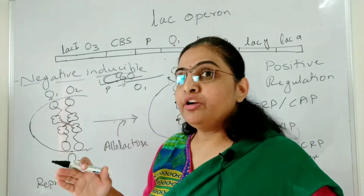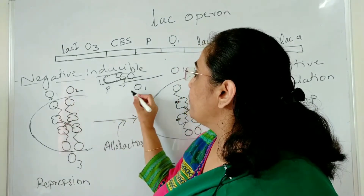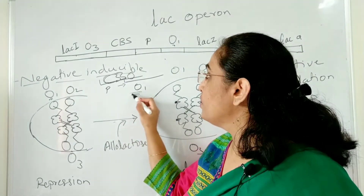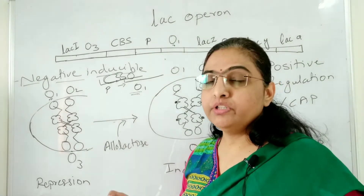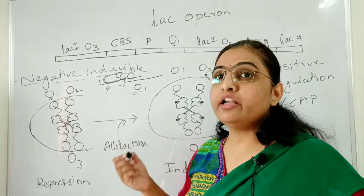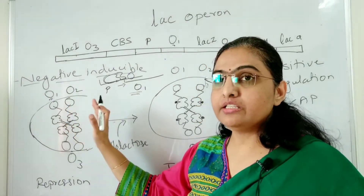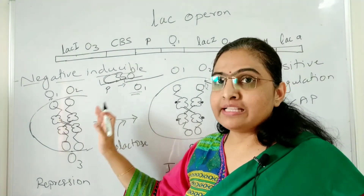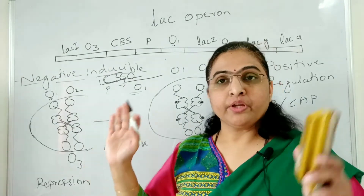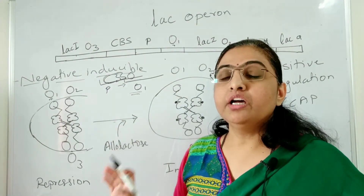As the transcriptional start site of the lac Z gene has been occupied by O1 and the repressor has bound there, that transcriptional start site is also not available for the start of transcription. So RNA polymerase is inhibited — it is inhibited to do the transcription. The main function of repression is done by this O1: it is not allowing the proper loading of RNA polymerase over the promoter and also not allowing RNA polymerase to get further into the structural genes. So this repressor molecule is going to stop transcription, not allowing the expression of the structural genes.